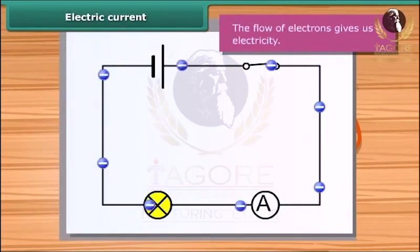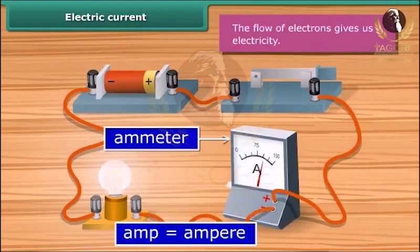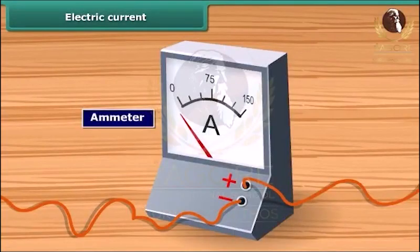The electric current consists of a movement of negative charges, that is, electrons. The flow of electrons gives us electricity. Electric current is measured by ammeter.